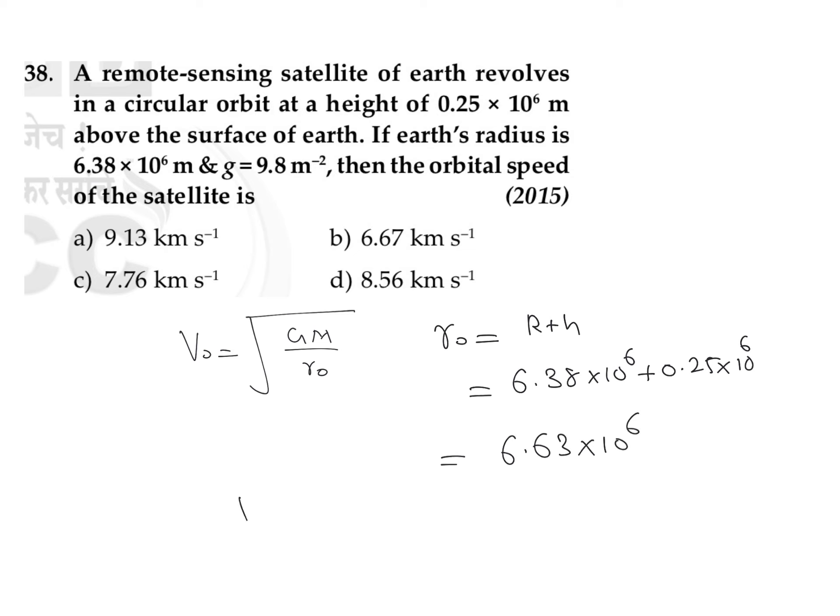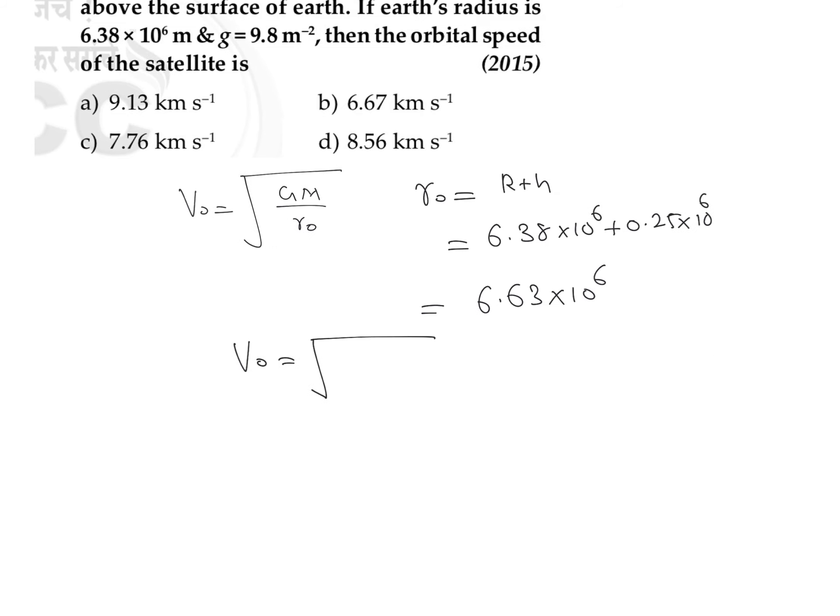Now we can write the value of this orbital velocity is equal to under root of, we can just substitute the values. We know that the value of G is 6.63 × 10⁻¹¹ into mass of Earth is around 6 × 10²⁴ kilogram divided by its orbital radius, we can take it as 6.63 × 10⁶.